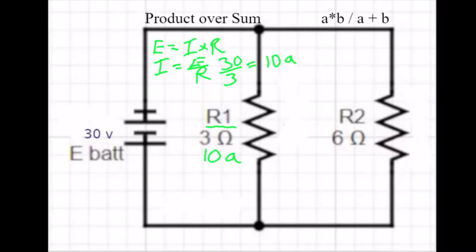Now we can do the same thing over here. We are going to take the voltage, which is 30, and we're going to divide it by the amperage, which is 6. And that's going to give you 5. So here we're going to have 5 amps.